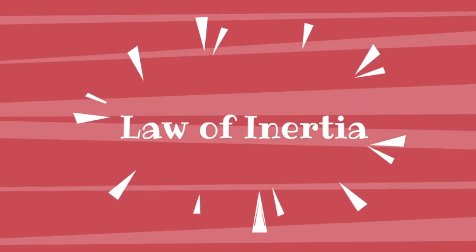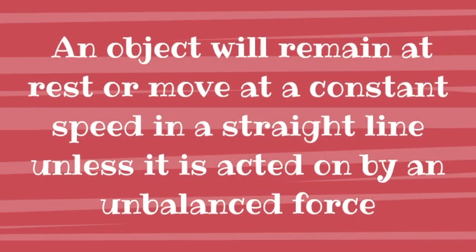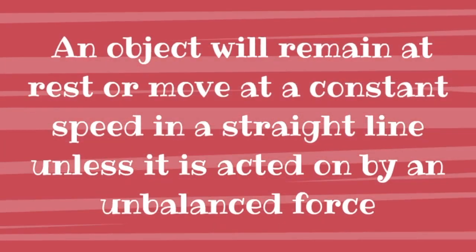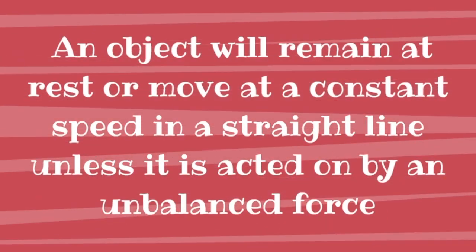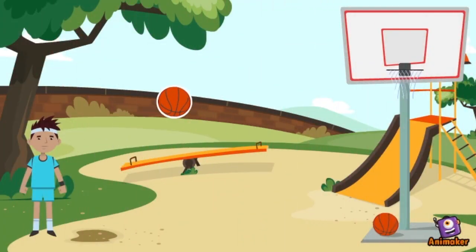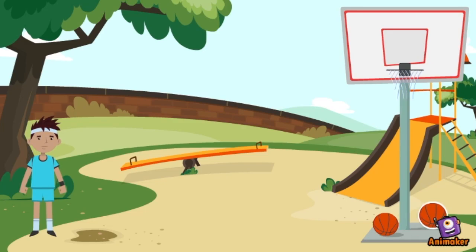Law of Inertia. An object may not rest or move at a constant speed in a straight line unless it is acted on by an unbalanced force. When a player shoots a basketball, it seems as if there is nothing obstructing the ball, but in reality there are several external forces acting on the ball.